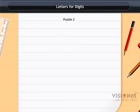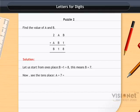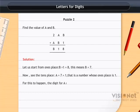Look at puzzle 2 as given here. Find the value of a and b. Let us start from ones place. b+1=8, this means b=7. Now see the tens place. a+7=1, that is a number whose ones place is 1. For this to happen, the digit for a must be 4. So the puzzle can be solved as shown.